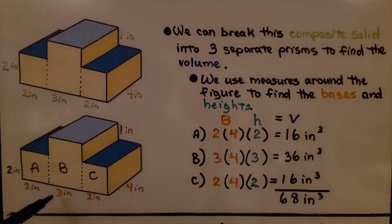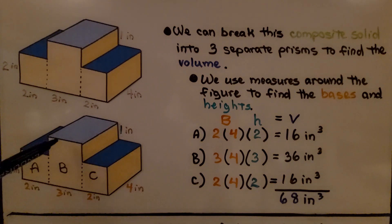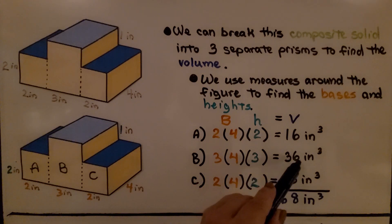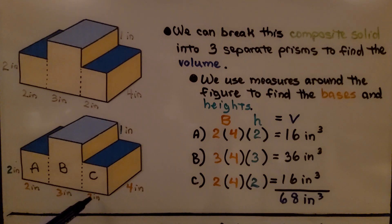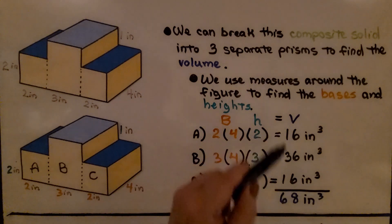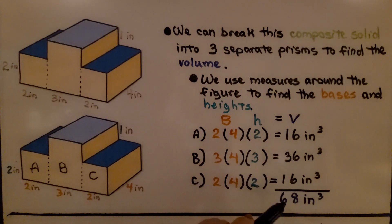For B, we use this two-inch height plus this one-inch height, so we have three times four for the base and two plus one, which is three, for the height. We get thirty-six inches cubed. For C, we do two times four for the base and a two-inch height — just like A — giving us sixteen inches cubed. We total all volumes together and get sixty-eight inches cubed.